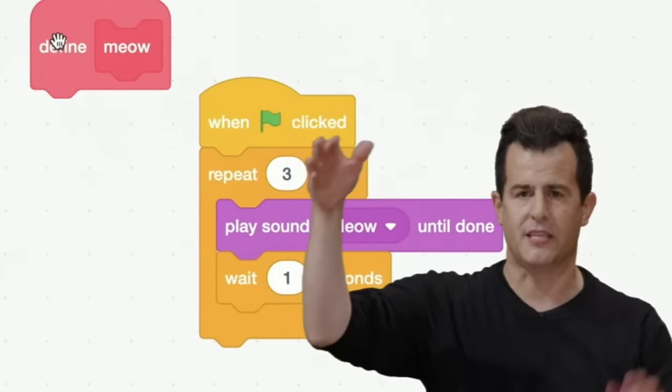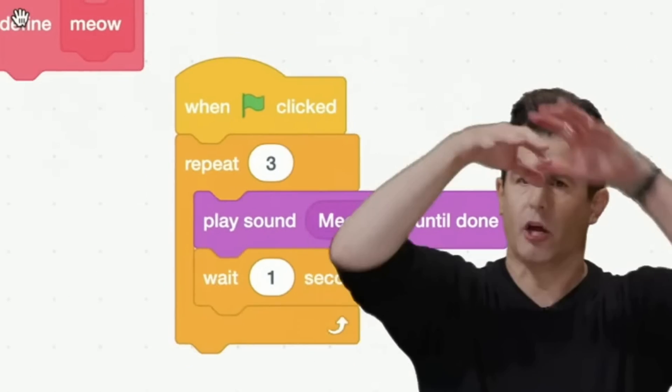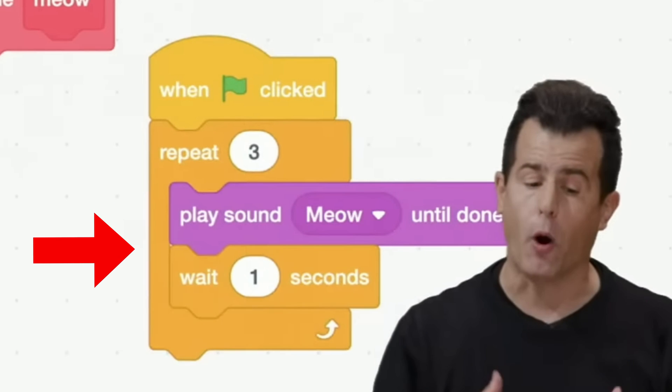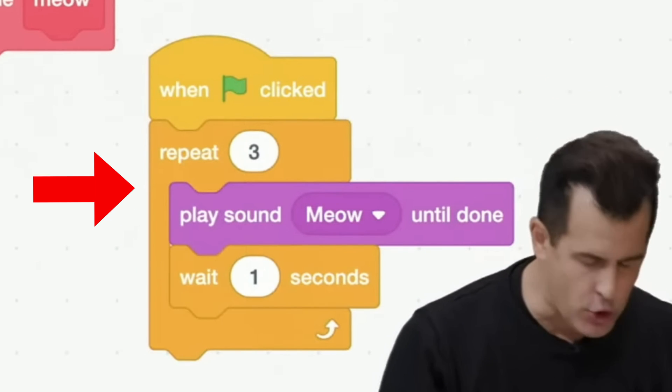we first see some code being put together to make the cat meow repeatedly, which includes a play sound meow and wait one seconds block, along with a repeat loop.